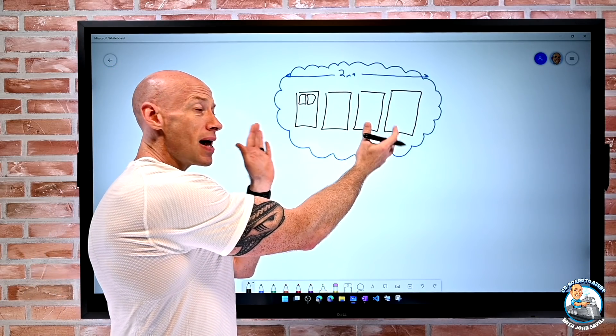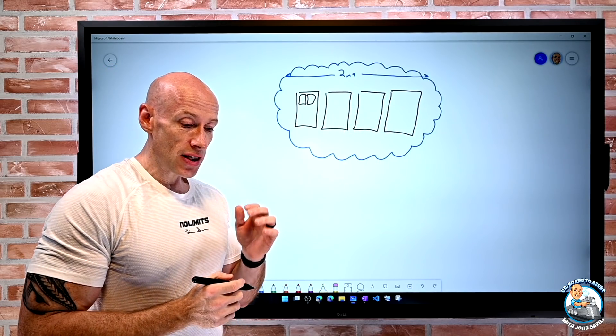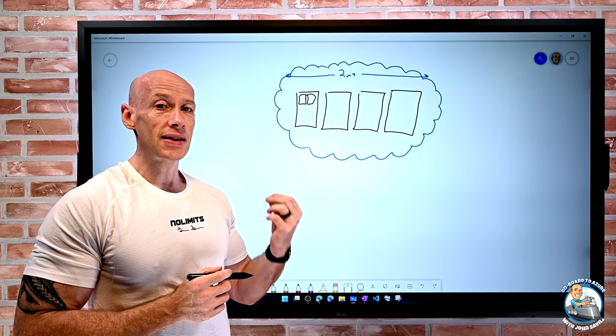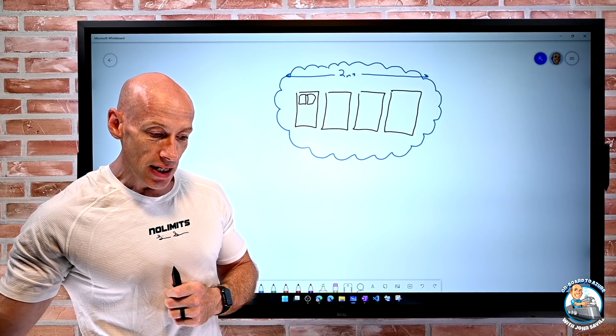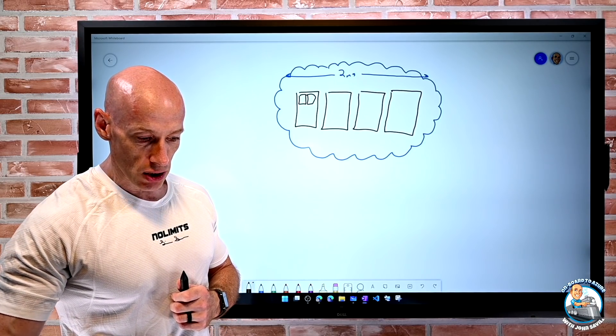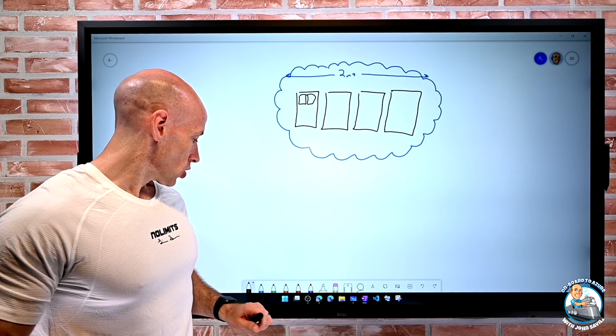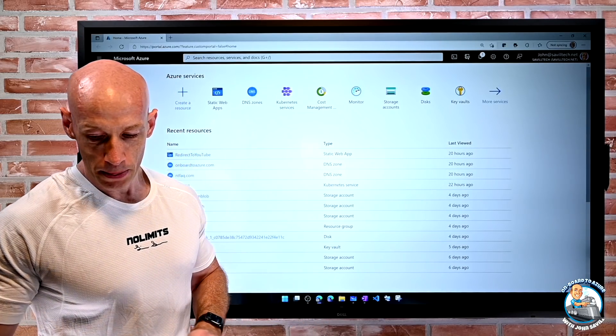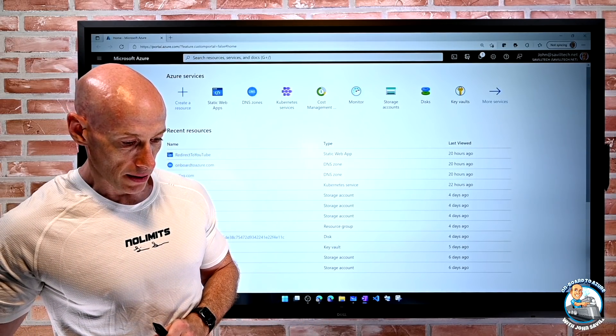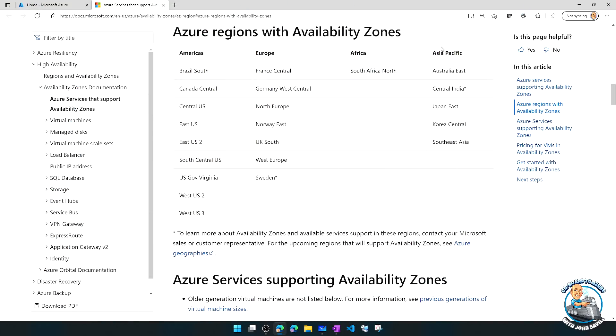So in many regions today we have this option of availability zones. And we can actually go and see that. So if I actually jump over to this web page, it will actually show us. Let's click this link, and we can see these are all of the regions with availability zones. So there are a lot of them right now. I can see in the Americas, in Europe, Africa, Asia Pacific, all of these support availability zones.